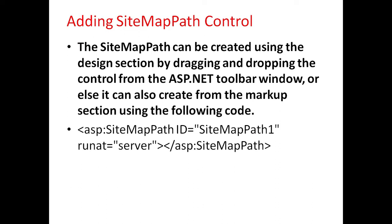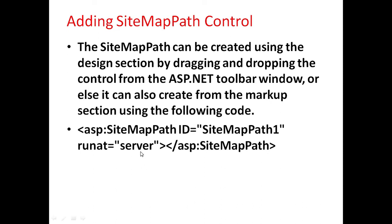The SiteMapPath control can be created using the design section by dragging and dropping the control from the ASP.NET toolbar window. Or it can also be created from the markup section using the following code: the SiteMapPath tag with its ID and the attribute runat="server".